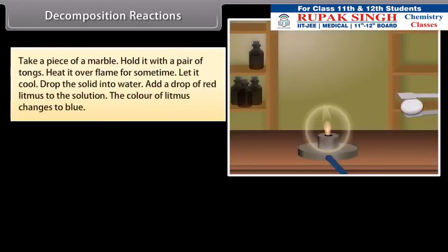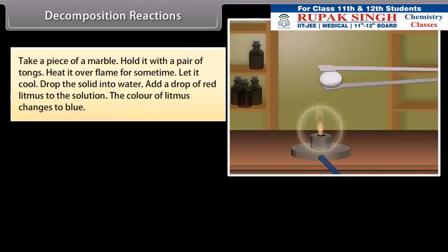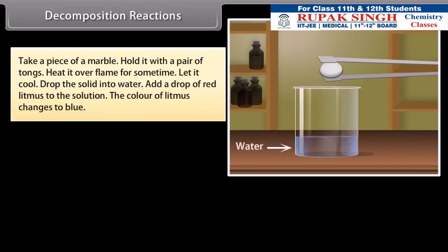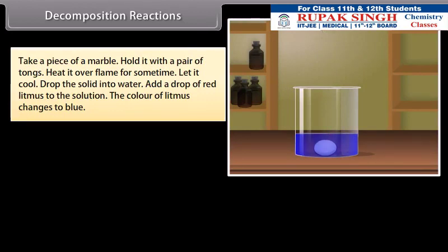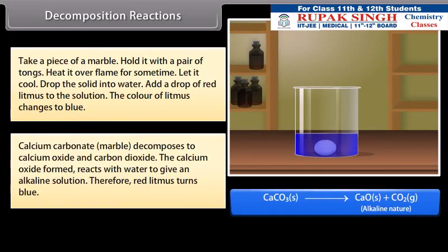Activity: Take a piece of marble. Hold it with a pair of tongs. Heat it over flame for some time. Now let it cool. Drop the solid into water. Add a drop of red litmus to the solution. The color of litmus changes to blue. Calcium carbonate (marble) decomposes to calcium oxide and carbon dioxide. The calcium oxide formed reacts with water to give an alkaline solution. Therefore, red litmus turns blue.